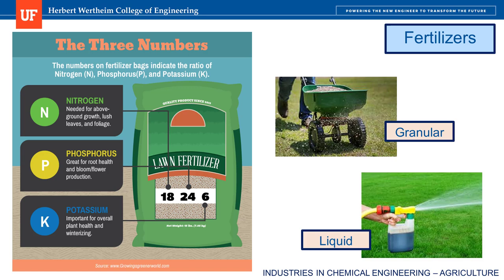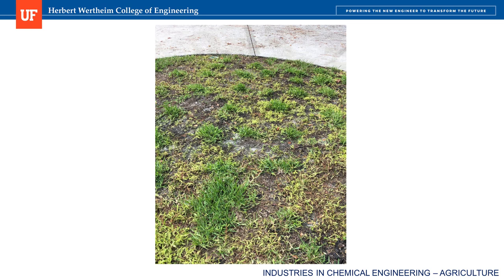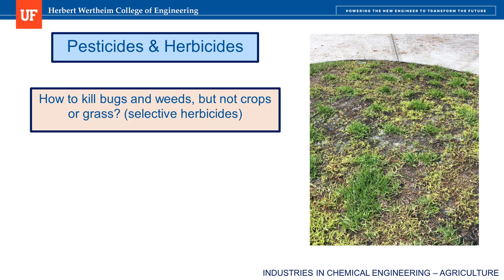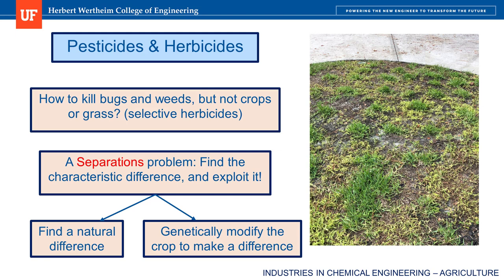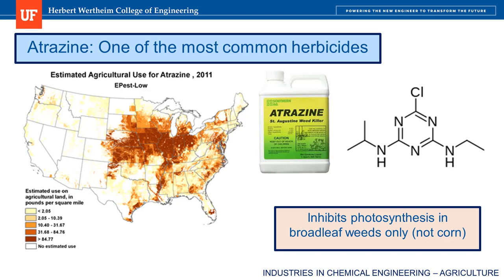A few years ago, before I knew how to properly care for my lawn, it got eaten by a swarm of chinch bugs, so I had to replant sod plugs. I planted them too far apart and crabgrass started growing in between. A lawn care company sprayed a chemical that killed the crabgrass but not the St. Augustine — this is a photo about a week after the application. How does a chemical work that kills some plants but not all? Separation processes all work by exploiting some characteristic difference, which can be natural or introduced with genetic engineering. Atrazine is one of the most common herbicides — it works by inhibiting photosynthesis in broadleaf weeds but not corn, and a chemical engineer has to design the process to make it.